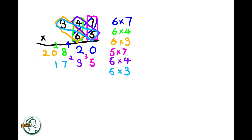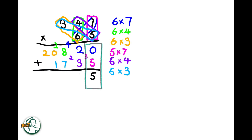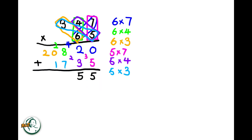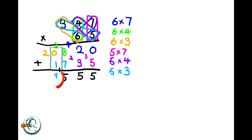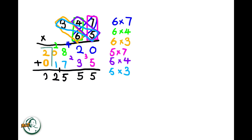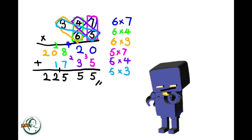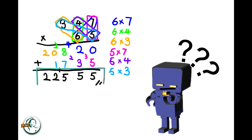Now, we add these two sets of products. Adding 0 and 5 gives us 5. 2 plus 3 is 5, and 8 plus 7 is 15. We write down the 5 and carry over the 1. 0 plus 1 is 1, and adding the carried over 1 to 1, we get 2. 2 plus 0 is 2. Therefore, the product of 347 and 65 is 22,555.